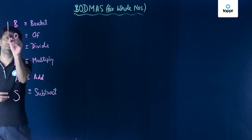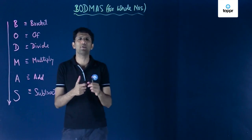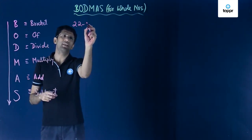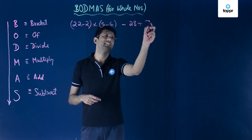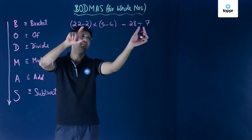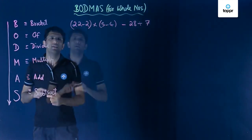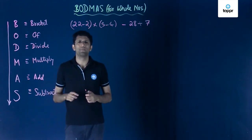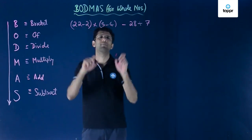BODMAS has been written in a given order — B, then O, then D, and so on. Whenever we are faced with a complicated expression in mathematics, we evaluate it using this priority. For example: 22 minus 2 into 5 minus 4 minus 28 divided by 7. When we have such a long expression made up of many operations, applying operators in any random order will give an incorrect answer. There is a specific method — the BODMAS method — that tells us which operator to apply first.